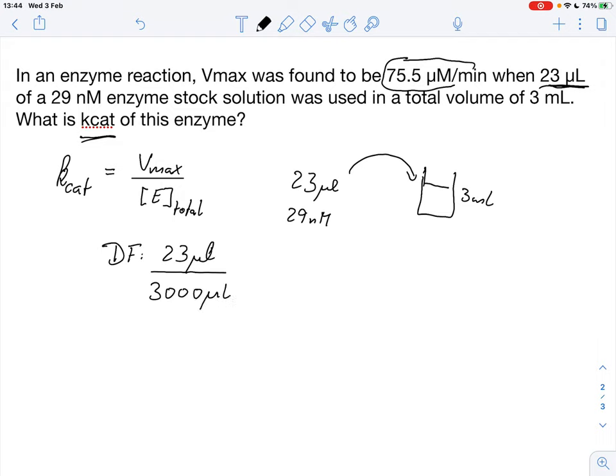And then in order to find the concentration that we have here in our solution, the enzyme concentration, that's quite easy. What we can do is we can simply say the concentration of the enzyme is the dilution factor multiplied by the concentration of the stock solution, so 29 nanomolar. And that is how we can calculate this enzyme concentration.